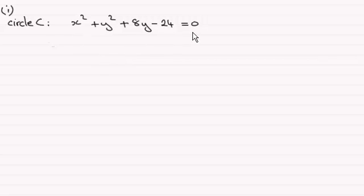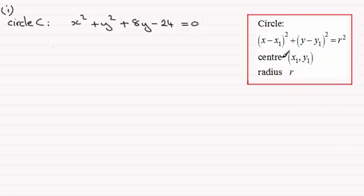Now there are several ways you can do this, but I find the easiest way is just to fall back on the form of the circle being x minus x1 all squared plus y minus y1 all squared equals r squared, where the center has coordinates (x1, y1) and the radius is r. To get this into this form, what I've got to do is complete the square.